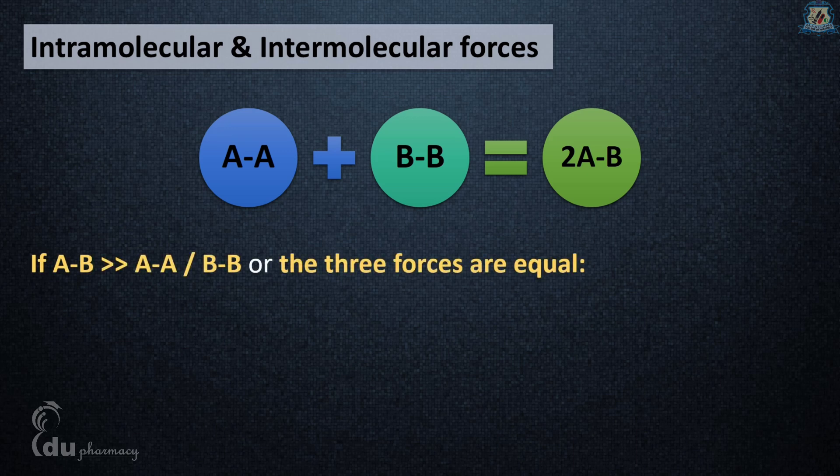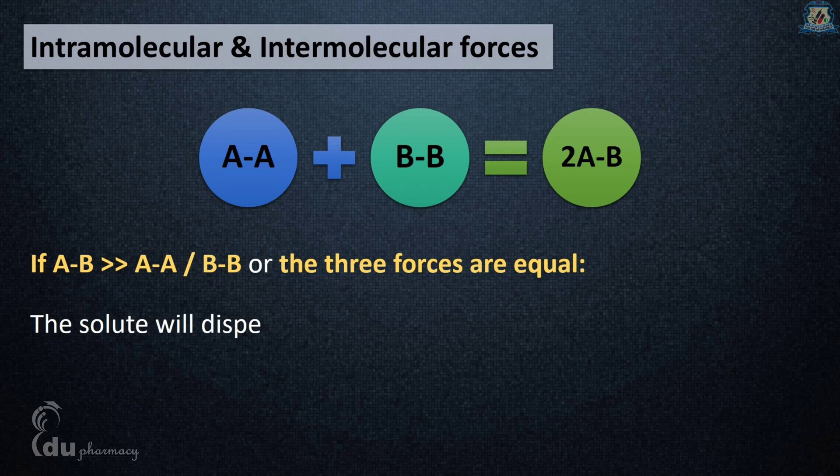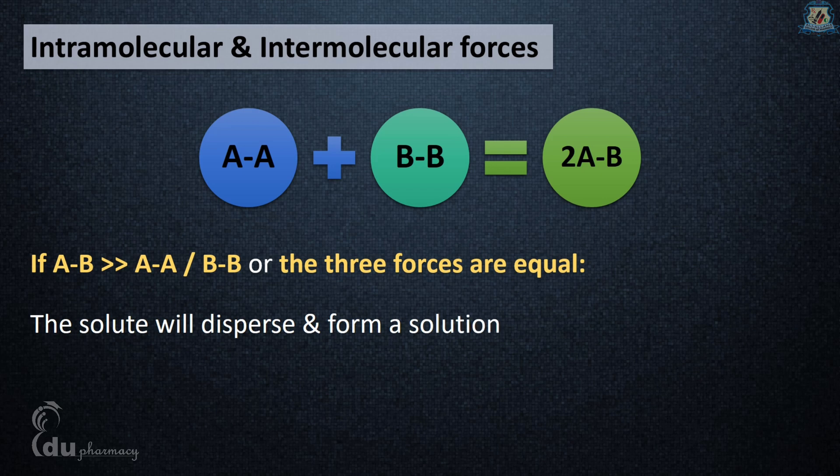When AB is greater than AA or BB, or all three forces are equal, the solute will disperse and form a solution. An example is solvation of sodium chloride in water.